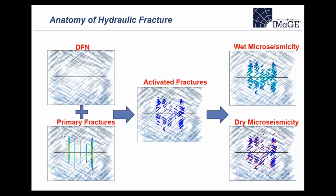Also, keep in mind the proppant we pump — which constitutes the effective part of the hydraulic fracture — is going to be confined to the primary fractures. The movements in the discrete fracture network in many cases aren't significant enough to take proppant; there might be a self-propping mechanism, but most proppant sits in the primary fractures. One thing we don't see from microseismic is that proppant distribution, even though it's very important for fracture effectiveness.